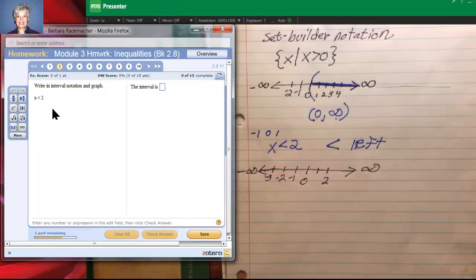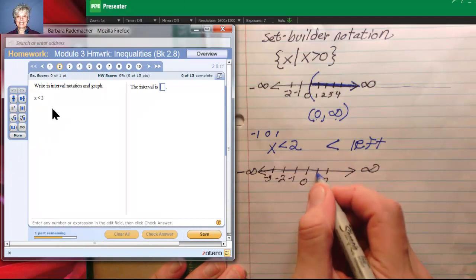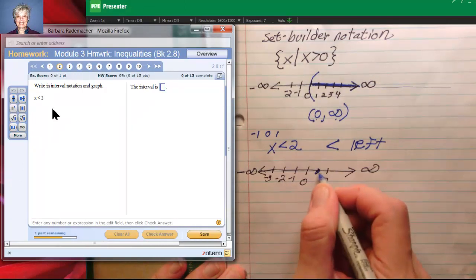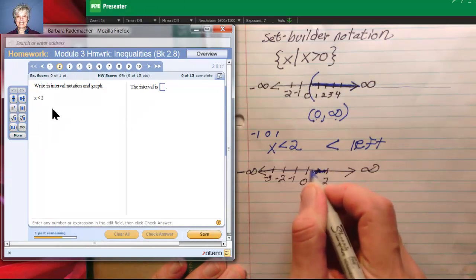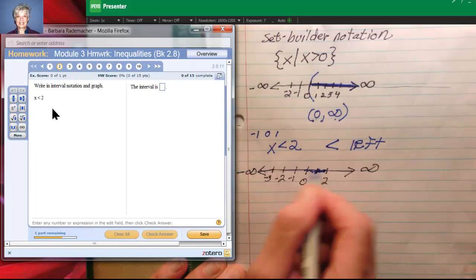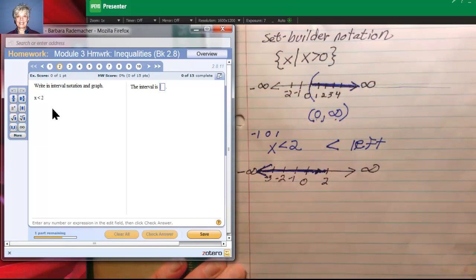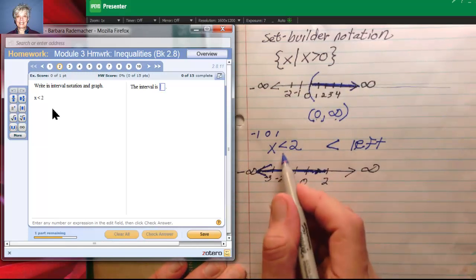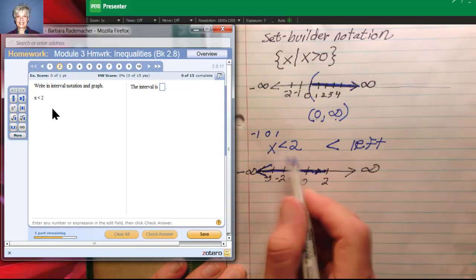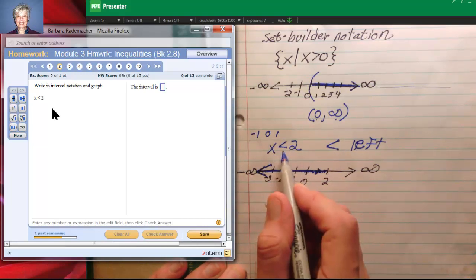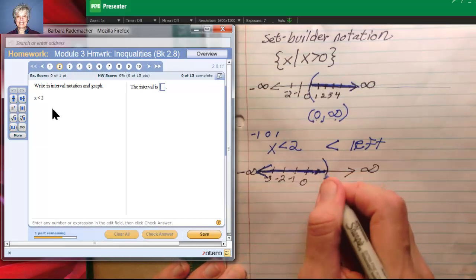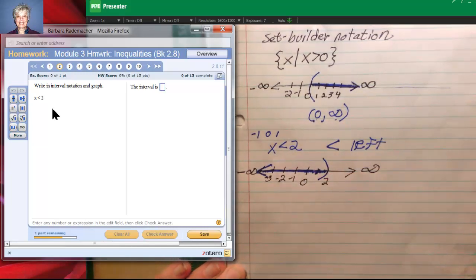Now we're being asked, find all the numbers that are less than 2. Well, 1 is less than 2. Any number to the left of 2 is less than 2. So my graph would actually be an arrow going off to the left forever. And since this is strictly less than, it doesn't say that x actually equals 2, but only that it's less than 2. I would put a parenthesis like that.